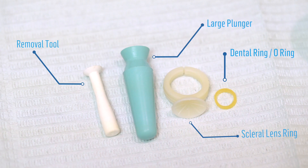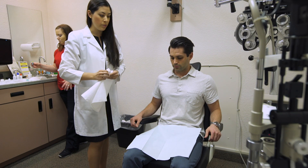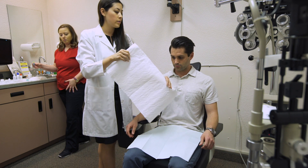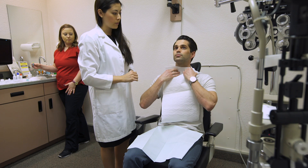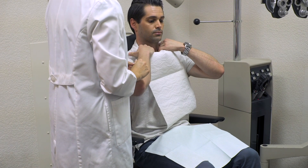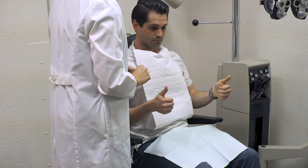Applicator devices may include a large plunger, dental ring or O-ring, and a scleral lens ring. Prepare the patient by setting a paper towel or dental bib on their lap to help catch the fluid and dye released after applying the scleral lens to the eye. Additional paper towels can be inserted into the patient's shirt like a bib for extra protection.